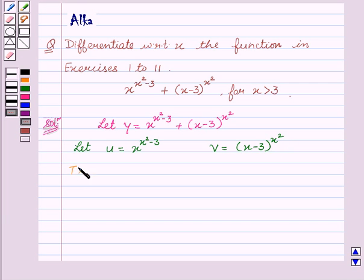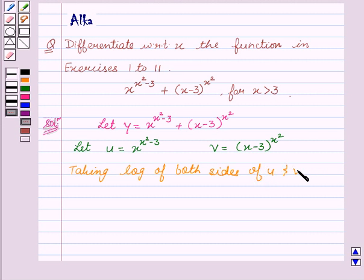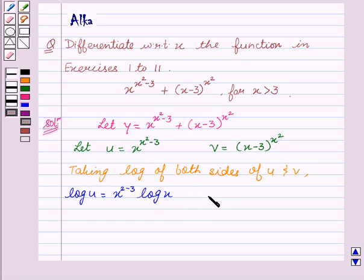Now taking log of both sides of u and v, we get: log u equal to x squared minus 3 into log x, and log v equal to x squared into log x minus 3.